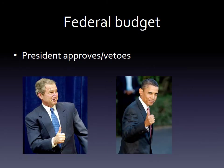Congress will ultimately approve a budget. Whether it's exactly the president's budget or not — it probably won't be — they will pass a budget. When Congress passes a budget, just like any other law, they send it to the president, who then has a choice of either approving it or vetoing it.